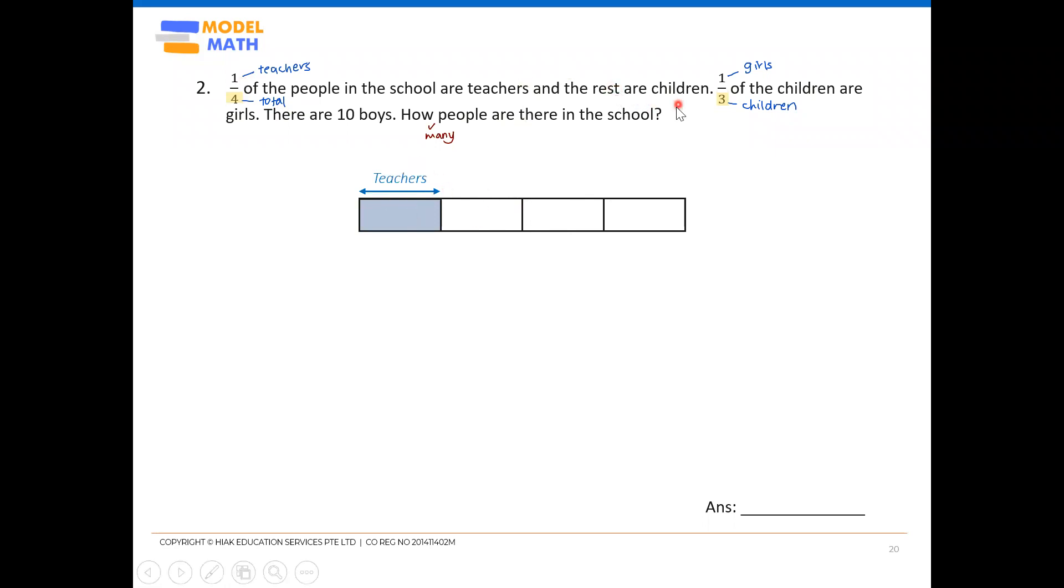Now, the rest are children. So, where are the rest? The rest, of course, have to be the remaining three units here. So let's label that children. So now, moving on to the one out of three of the children are girls. Just now, we discussed that the three units represent children.